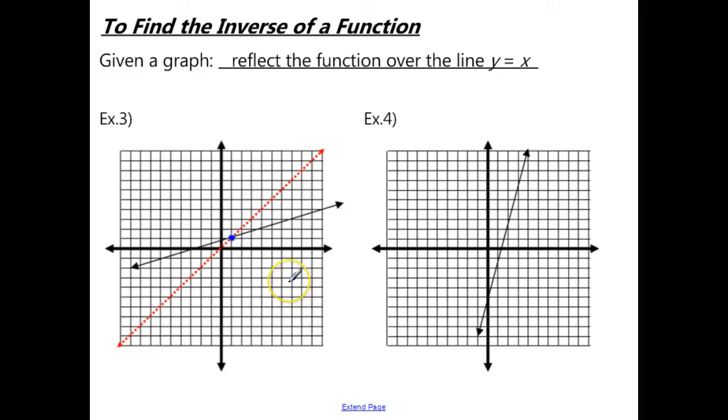And then we need to select one other point that's not on the line. So I'm going to use this point because this looks like it crosses right at that point. So we're going to count straight down towards that line y equals x. So we go 1, 2, 3, 4, 5. And now we want to reflect this way, 1, 2, 3, 4, 5.